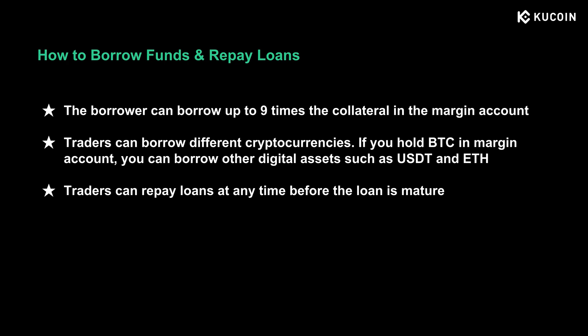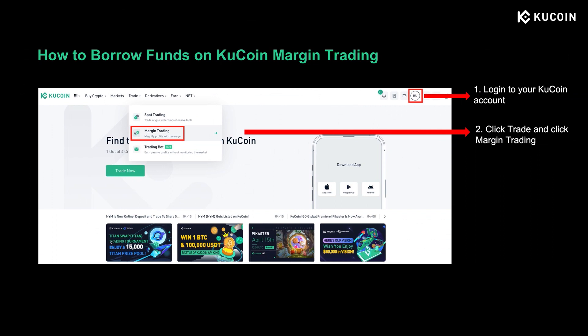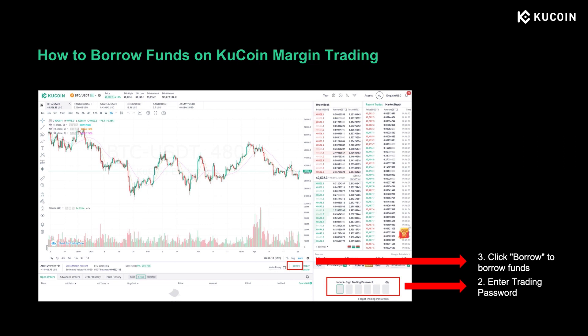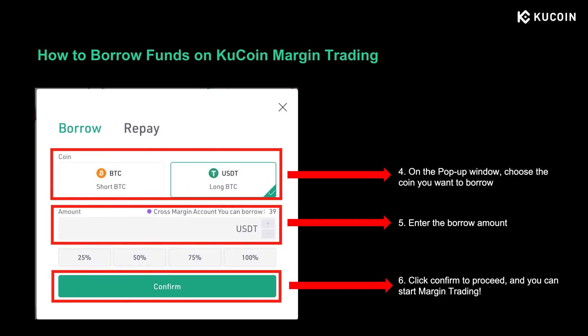Users can repay the loan at any time before the loan matures. Let's quickly go through how to borrow funds for those who haven't done it before. First, go to the KuCoin website and log into your account. Click Trade and enter Margin Trading. On the margin trading page, enter your six-digit trading password and click Borrow. On the pop-up window, select the coin you want to borrow — if you want to go long on BTC, borrow USDT; if you want to short, borrow BTC. Then enter the borrow amount and click Confirm to proceed.